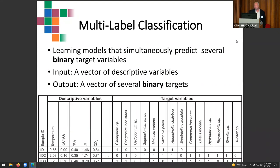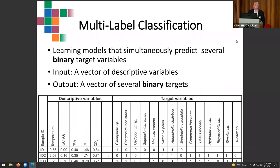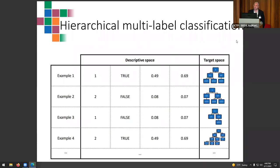Here is an example of a multi-label classification task using real data from rivers in Slovenia, collected during water quality monitoring. The descriptive variables describe the water — temperature, concentration of nitrates, oxygen, and other pollutants. On the target side, we predict the presence or absence of a number of organisms. With the taxonomy of living organisms taken into account, this is hierarchical multi-label classification.